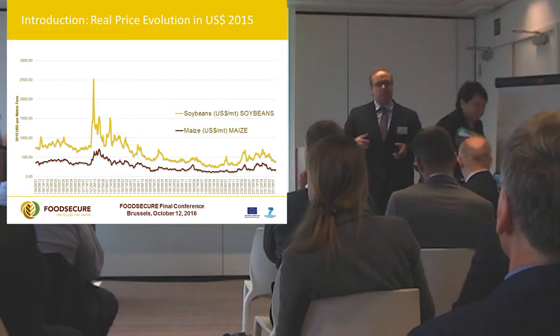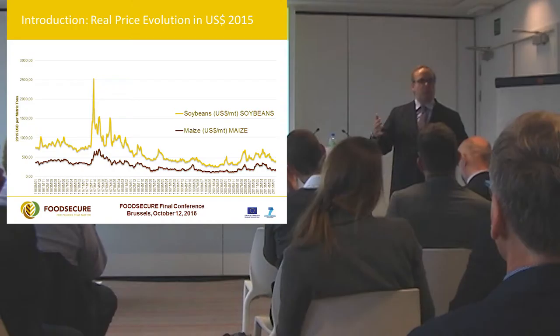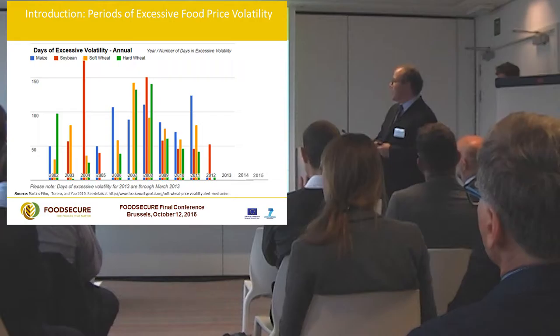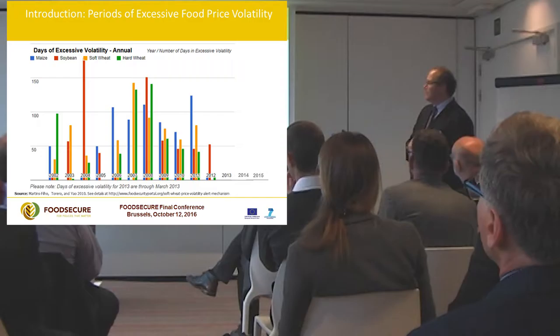The message is that policies exactly related to price spikes were not necessarily the right approach, and we need to look at what else was happening — something was restricting access to food. To understand that, we've been developing a metric of what we call volatility, and specifically excessive volatility.